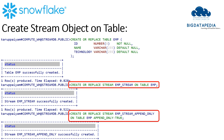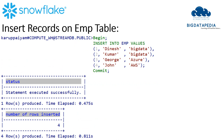Notice I am creating two stream objects on the same table. The first stream object, EMP_stream, will capture all data changes on the EMP table. The second stream object, EMP_stream_append_only, will store only new record insertions.